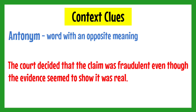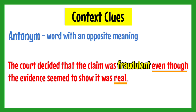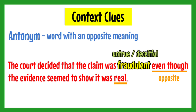Another one. In this sentence, you have to identify the meaning of the word fraudulent. The context clue is the clause 'even though the evidence seemed real.' The connector 'even though' tells us that the idea it introduces is opposite to the idea that precedes it. Therefore, the meaning of fraudulent is the opposite of real — in other words, untrue or deceitful.